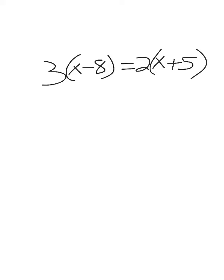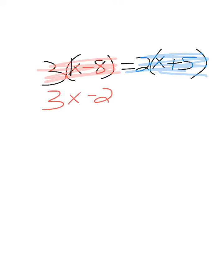I have distribution on the left side and I have distribution on the right side as well. So if I distribute on the left, I have 3 times 1x, so I'll end up with 3x minus 24 equals, and then 2 times 1 is 2x, and 2 times positive 5 is positive 10.